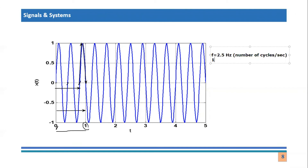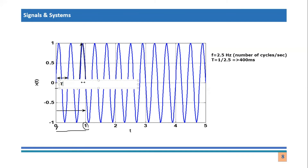One way to calculate the time period is to take the reciprocal of the frequency. So T equals one over 2.5, which equals approximately 400 milliseconds. The time period for this signal is around 400 milliseconds. If you want to visualize that duration on the graph, 400 milliseconds is equal to 40 percent of a second. That duration corresponds to one complete cycle — the fundamental time period T of this signal — which equals approximately 400 ms, with a frequency of 2.5 Hz.